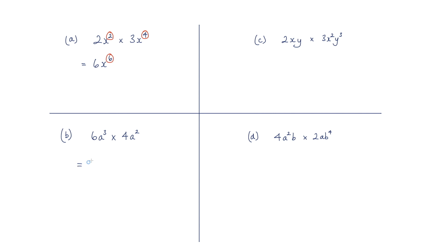For question b, similar sort of thing. We've got the 6 multiplied by the 4 is 24. We've got a cubed multiplied by a squared which is a to the power of 5.